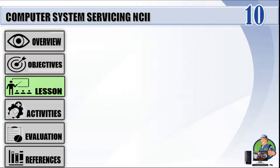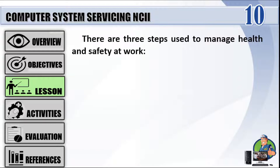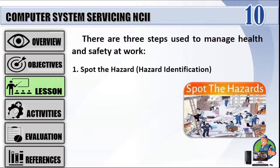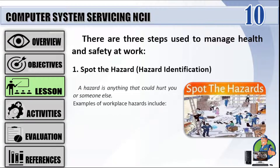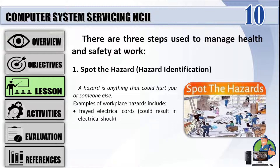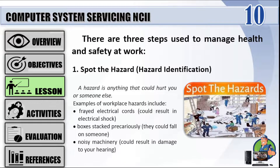There are three steps used to manage health and safety at work. Step 1: Spot the hazard — hazard identification. A hazard is anything that could hurt you or someone else. Examples of workplace hazards include frayed electrical cords that could result in electrical shock, boxes stacked precariously that could fall on someone, and noisy machinery that could result in damage to your hearing.